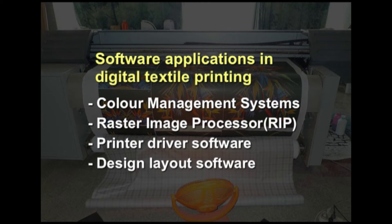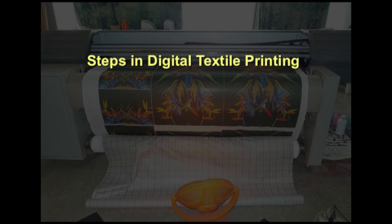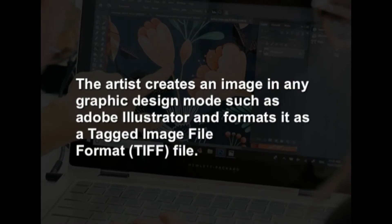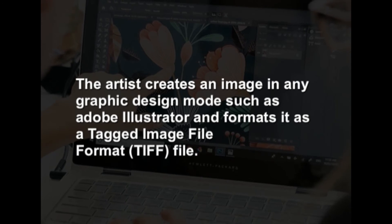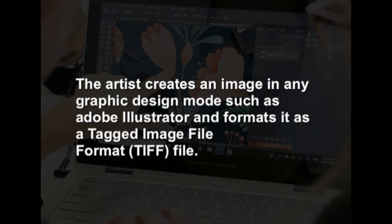We have seen the inks and cartridges used for the printing method. Now let us see the software adopted. Software applications in digital textile printing include a colour management system, raster image processor (RIP), printer driver software, and design layout software. These are the major softwares required for digital printing, produced by different companies. The steps in digital textile printing begin with design development: the artist creates an image in a graphic design tool such as Adobe Illustrator and formats it as a Tagged Image File Format (TIFF) file. This file format is preferred as it stores all details of the image compared to JPEG, even though it takes up more space.